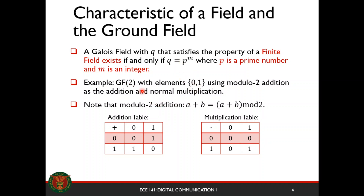For example, we have GF(2). GF(2) has elements 0 and 1, using modulo 2 addition as the addition and normal multiplication. Modulo 2 addition is defined as: you add your elements and get modulo 2 of the sum — basically the remainder when you divide A plus B by 2. That's your modulo 2 addition.